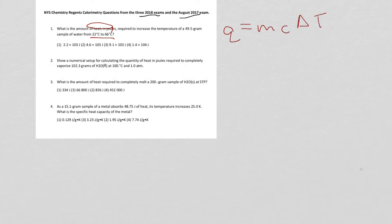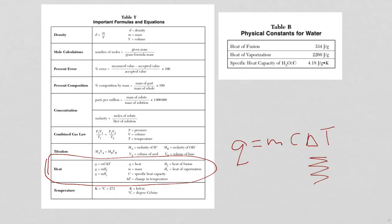So not only do I need Q is equal to MC delta T, I also need then the specific heat capacity for water. You notice it's not given in the problem. The reason why it's not given in the problem, it's on the reference table. So if we go back and take a look, here it is. Specific heat capacity for water. That gets the symbol C. So 4.18.